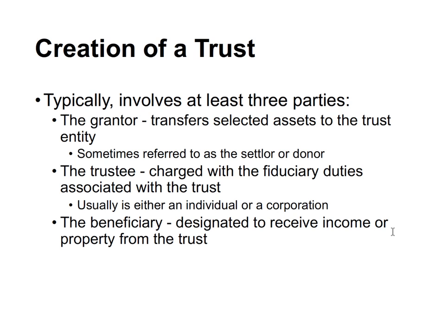The trustee can either be an individual or a corporation. The beneficiary is the third party — and there can be many beneficiaries — but there has to be at least one designated to receive income or property from the trust at some point along a timeline.